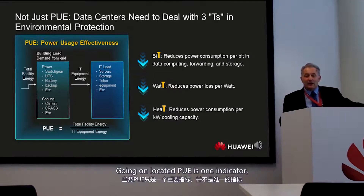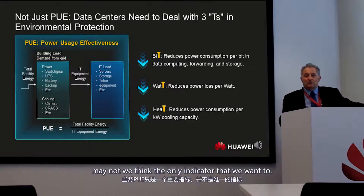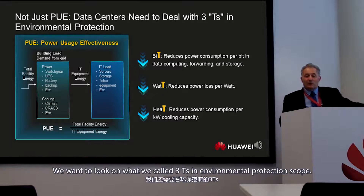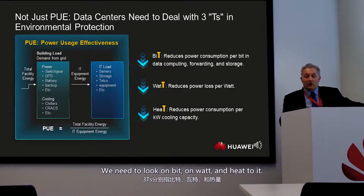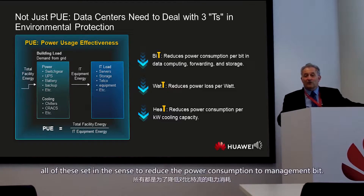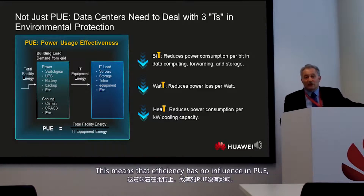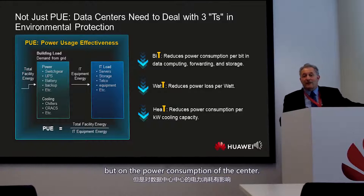PUE is one indicator, but not the only one we should look at. We want to look at what we call the 3Ts in the environmental protection scope. We need to look at bit, watt, and heat — and work to reduce the power consumption needed to manage each. Reducing bit consumption means efficiency that doesn't influence PUE but has a big impact on power consumption.